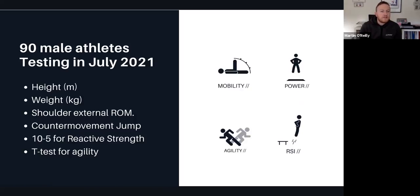For this study, the six measures that we focused on were height, weight, shoulder external range of motion or flexibility, counter movement jump height, reactive strength score from the 10-5 test, and the t-test for agility.